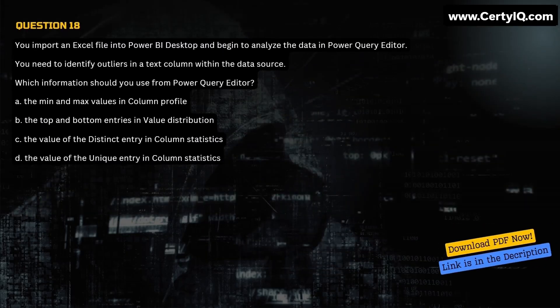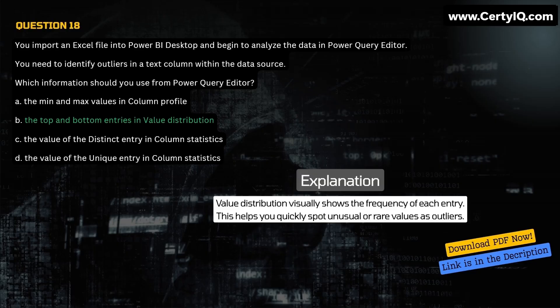Question 18. You import an Excel file into Power BI Desktop and begin to analyze the data in Power Query Editor. You need to identify outliers in a text column within the data source. Which information should you use from Power Query Editor? A. The min and max values in column profile. B. The top and bottom entries in value distribution. C. The value of the distinct entry in column statistics. D. The value of the unique entry in column statistics. Correct answer is B. Explanation: Value distribution visually shows the frequency of each entry. This helps you quickly spot unusual or rare values as outliers.